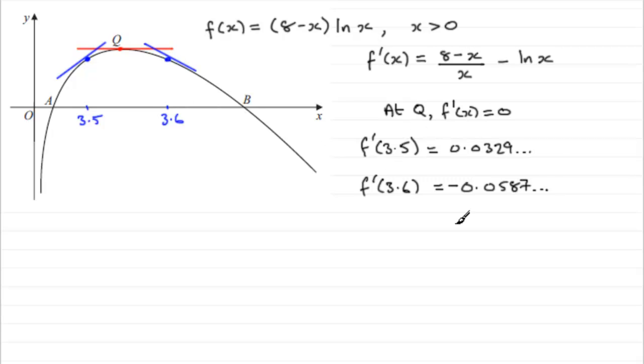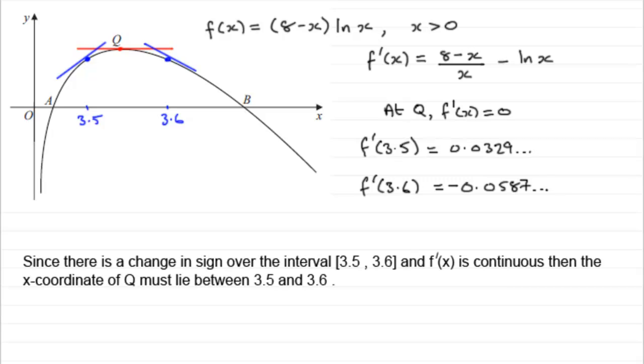Well, you'd need to summarize that at the end. So I've written this, that since there is a change in sign over the interval 3.5 to 3.6, and f'(x), that's the gradient, is continuous, then the x-coordinate of Q must lie between 3.5 and 3.6. Okay.